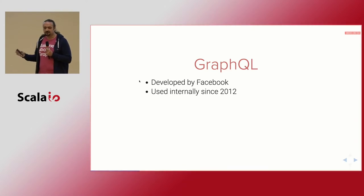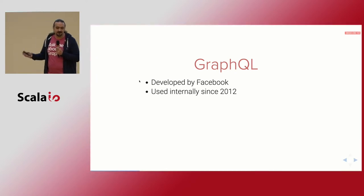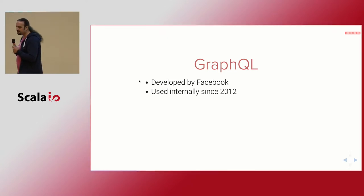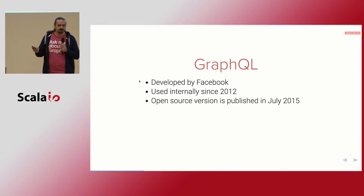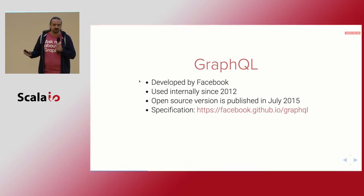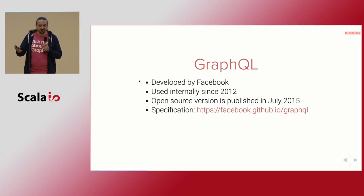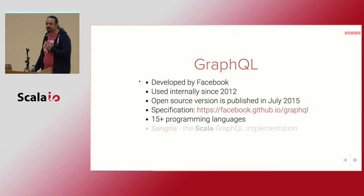They tried to use a REST API, but after some attempts it was not really working for them. In 2012 they started working on GraphQL, and in July 2015 they open-sourced it. What they open-sourced was the actual specification — not a library or specific technology, just a description of syntax and semantics of execution. At the moment it is already implemented for at least 15 programming languages, including Scala. Sangria is the Scala implementation.